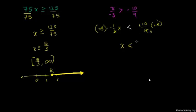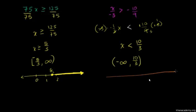On the right-hand side, negative times negative gives a positive. Dividing numerator and denominator by 3 gives 10 over 3. So x is less than 10 over 3. In interval notation, the solution set goes from negative infinity up to 10 over 3, with a parenthesis — not including 10 over 3 — since we have strict less than. On the number line, 10 over 3 is 3 and 1 third; we place an open dot there and shade everything to the left.